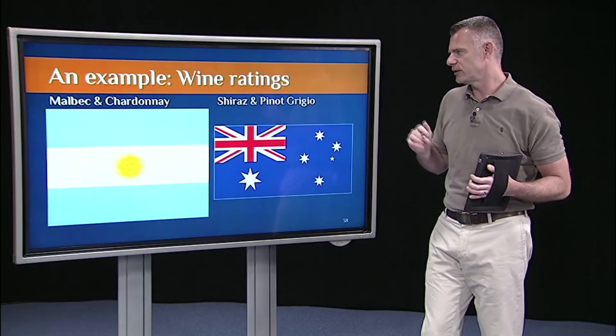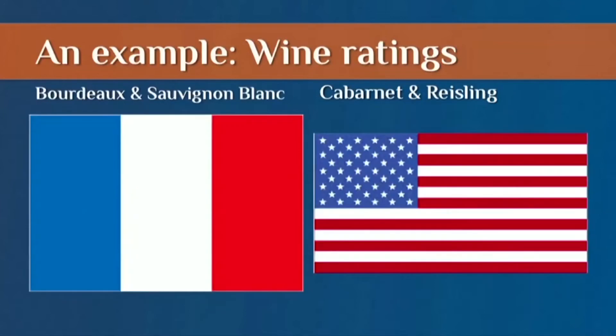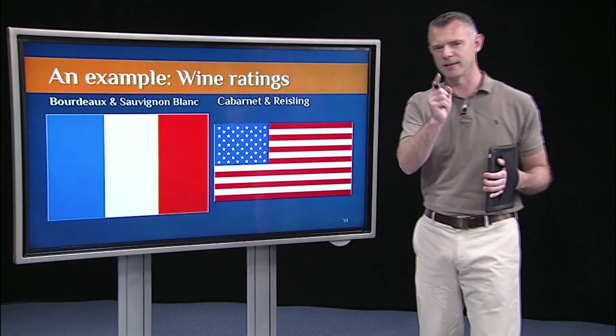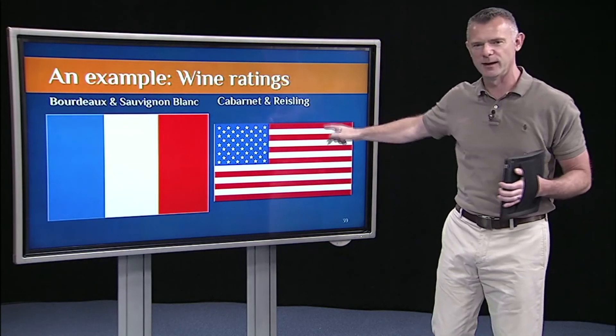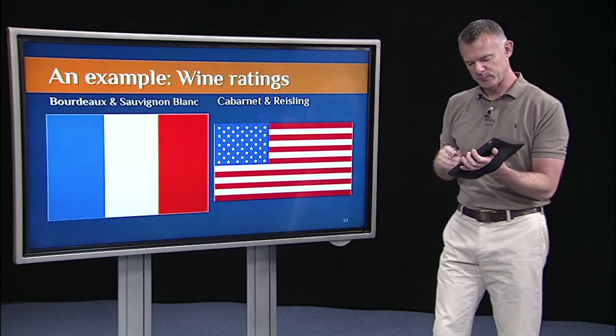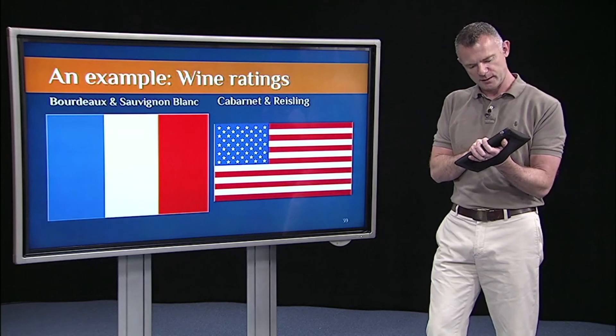So let's say Argentina submitted a Malbec. They're very known for their quality Malbecs. And a Chardonnay. Australia, let's say they submitted a Shiraz and a Pinot Grigio. France, let's say they submitted a Bordeaux and Sauvignon Blanc. And the US, let's say they submitted a Cabernet and a Riesling. You say Riesling from the US. But yes, upstate New York has really great Rieslings, which is where I'm from. So that wasn't random. I had to slip that in. That was personal. So the US submitted a Cabernet, probably from California. A Riesling from upstate New York, let's say.